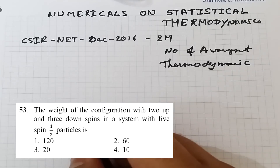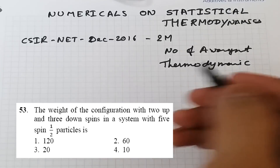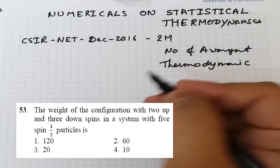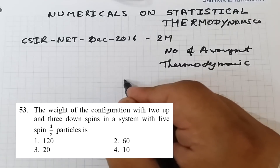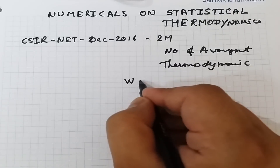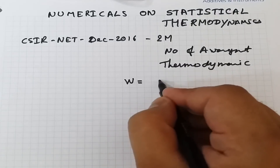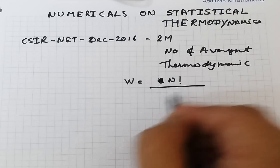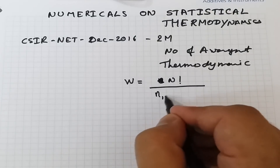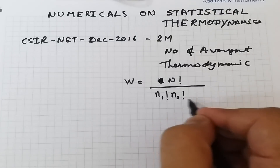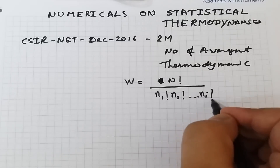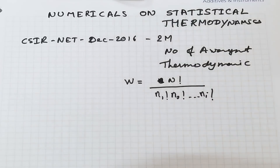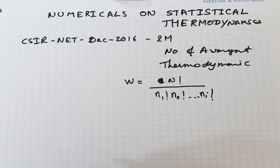This number of arrangements is nothing but our thermodynamic probability. The formula to calculate thermodynamic probability is: W = N! / (n₁! · n₂! · ... · nₖ!). This is the formula to calculate thermodynamic probability.